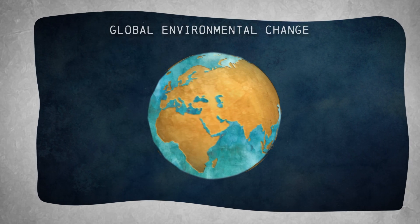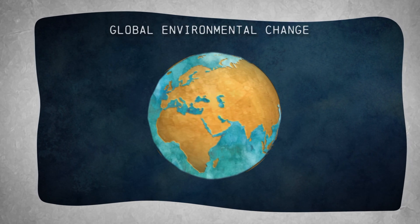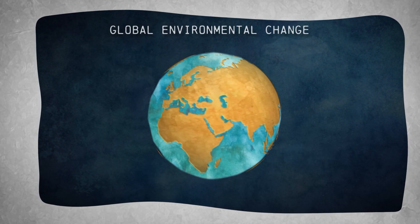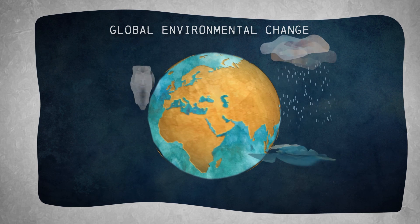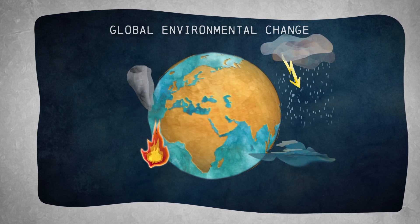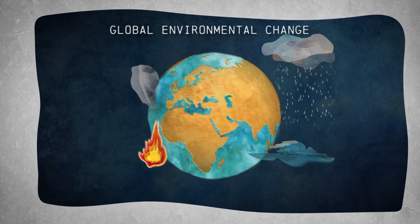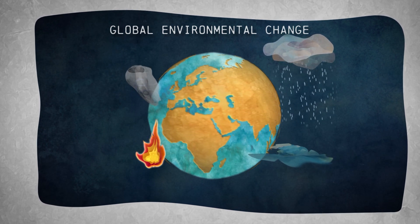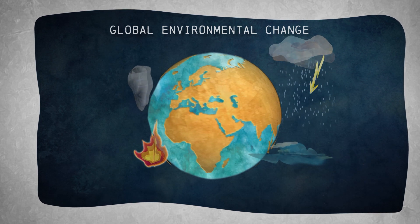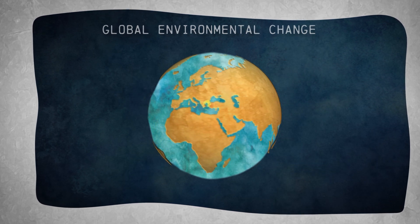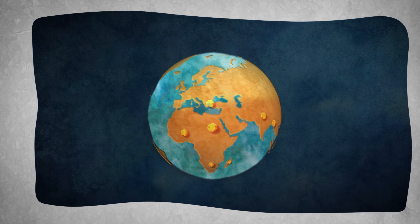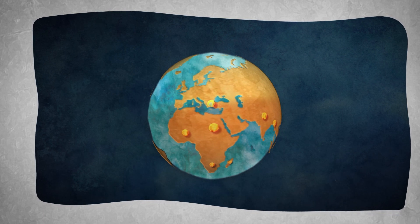Global environmental change, which includes increasing temperatures, fluctuating rainfall, intensified extreme weather events and land degradation, affects the lives of people around the world. Vulnerable communities in the Global South are disproportionately affected.